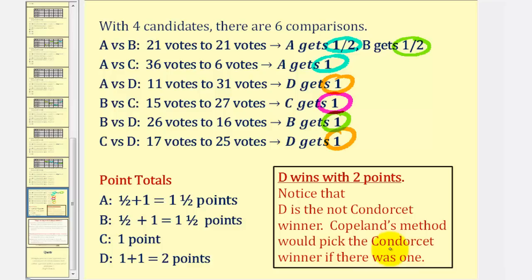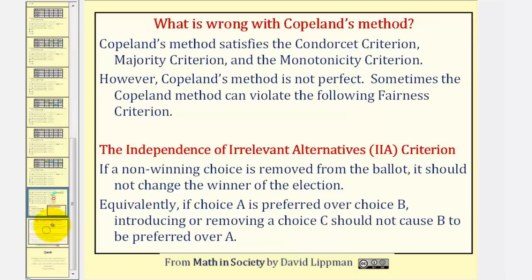Now let's talk about what can go wrong when using Copeland's Method. Copeland's Method does satisfy the Condorcet criterion, the majority criterion, and the monotonicity criterion. However, Copeland's Method is not perfect. Sometimes it can violate the fairness criterion called the independence of irrelevant alternatives criterion, which states that if a non-winning choice is removed from the ballot, it should not change the winner of the election. For example, if choice A is preferred over B, introducing or removing C should not cause B to be preferred over A. We'll talk more about this in the next lesson.